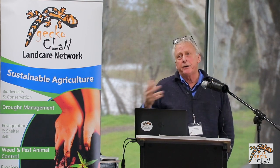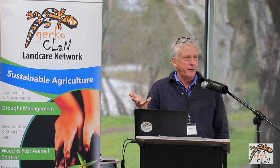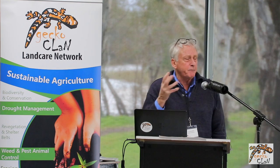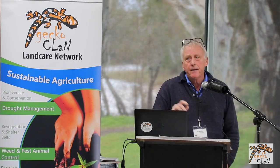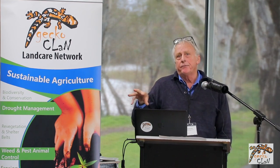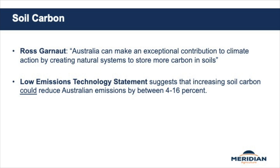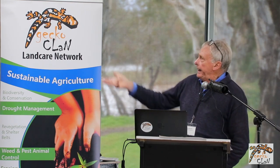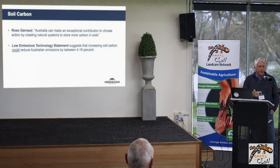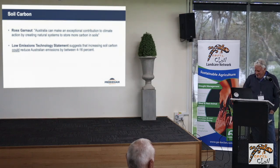One of the questions I often get asked is, should we be farming soil carbon? What I'd like to do is spend a little bit of time on soil carbon, the practicalities of it, and then segue into how we actually grow it. All this sort of stuff started because Ross Garno said we can make an exceptional contribution to climate action by creating natural systems with more carbon in soil. Figures suggest we could reduce Australia's emissions by 4 to 16%. What I want to talk about is how realistic that actually is, and how it fits into the carbon credit units the government puts out.